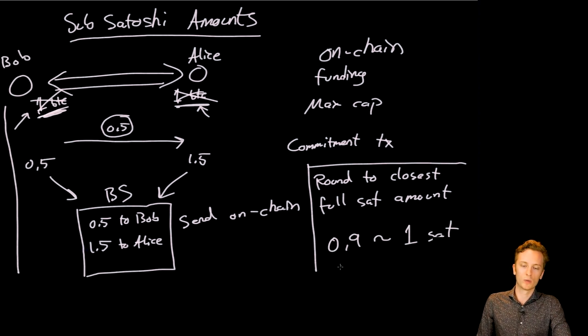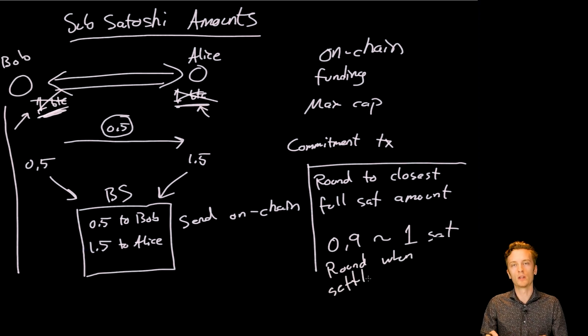Because the Lightning Network has no limitation of how small you can make a number or how many times you can divide a Bitcoin. Only the Bitcoin blockchain has that limitation. So, you can do as many of these small sub-Satoshi payments on the Lightning Network as you want. But then, when it comes time to settle it on the blockchain, that is when this will be rounded to the closest Satoshi number, so that the Bitcoin blockchain can support the actual transaction when you want to close the channel. And that is how it works.